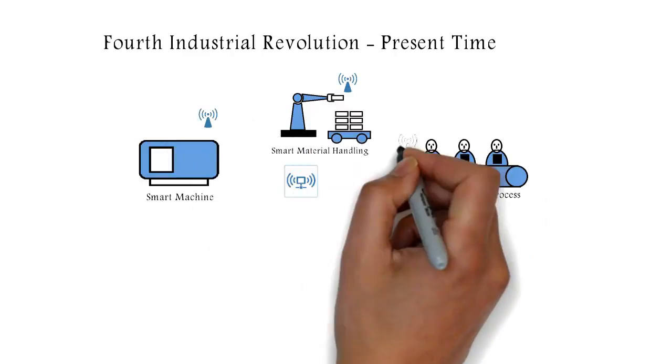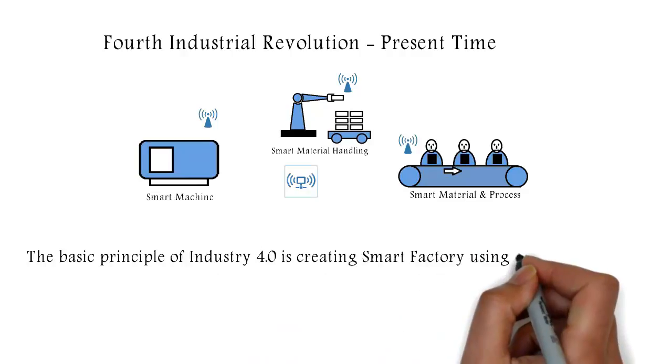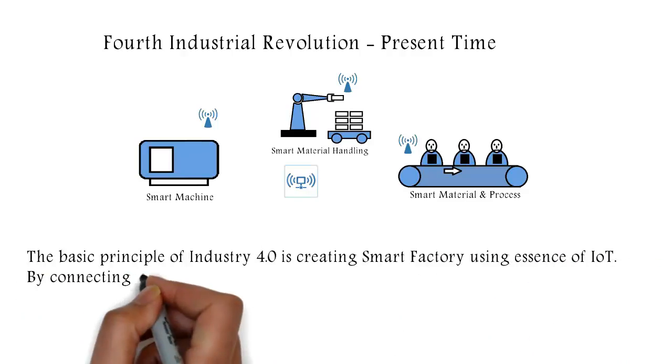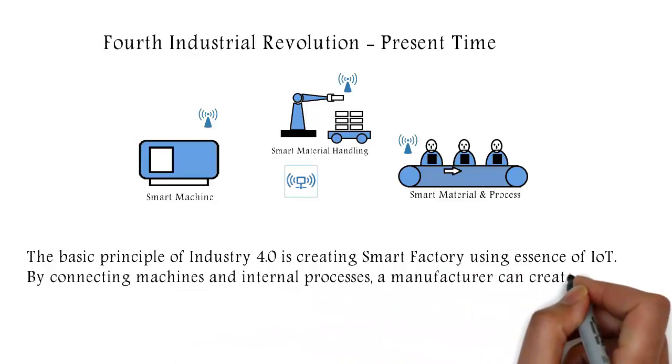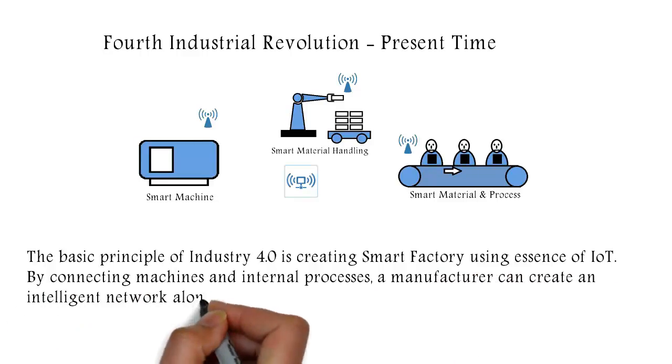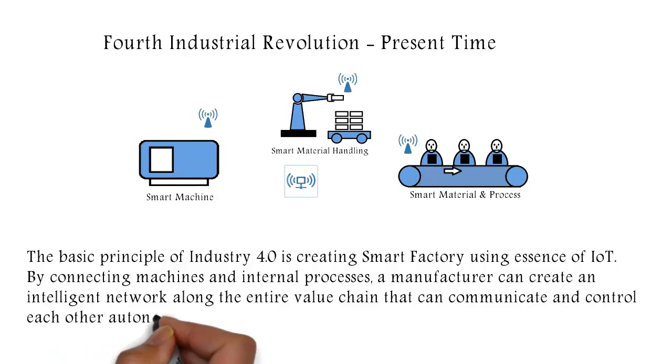The basic principle of Industry 4.0 is creating smart factory using the essence of IoT. By connecting machines and internal processes, a manufacturer can create an intelligent network along the entire value chain that can communicate and control each other autonomously with significantly reduced intervention.